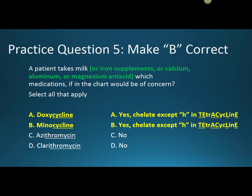Question five: a patient takes milk, iron supplements, calcium supplements, or aluminum or magnesium antacids — which medications in the chart would be of concern? The answer is doxycycline and minocycline, because both chelate with these cations, making the tetracycline inert. Another mnemonic: if you look in the word 'tetracycline,' you can find all the letters of 'chelate' except the H.